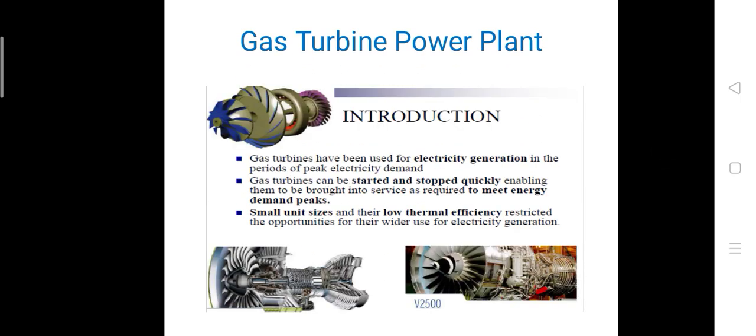In this class we are going to see Gas Turbine Power Plant. This gas turbine power plant has been used for electricity generation in the periods of peak electricity demand. Gas turbines can be started and stopped quickly, enabling them to be brought into service as required to meet energy demand peaks. Small unit sizes and their lower thermal efficiency restricted the opportunities for their wider use for electricity generation.